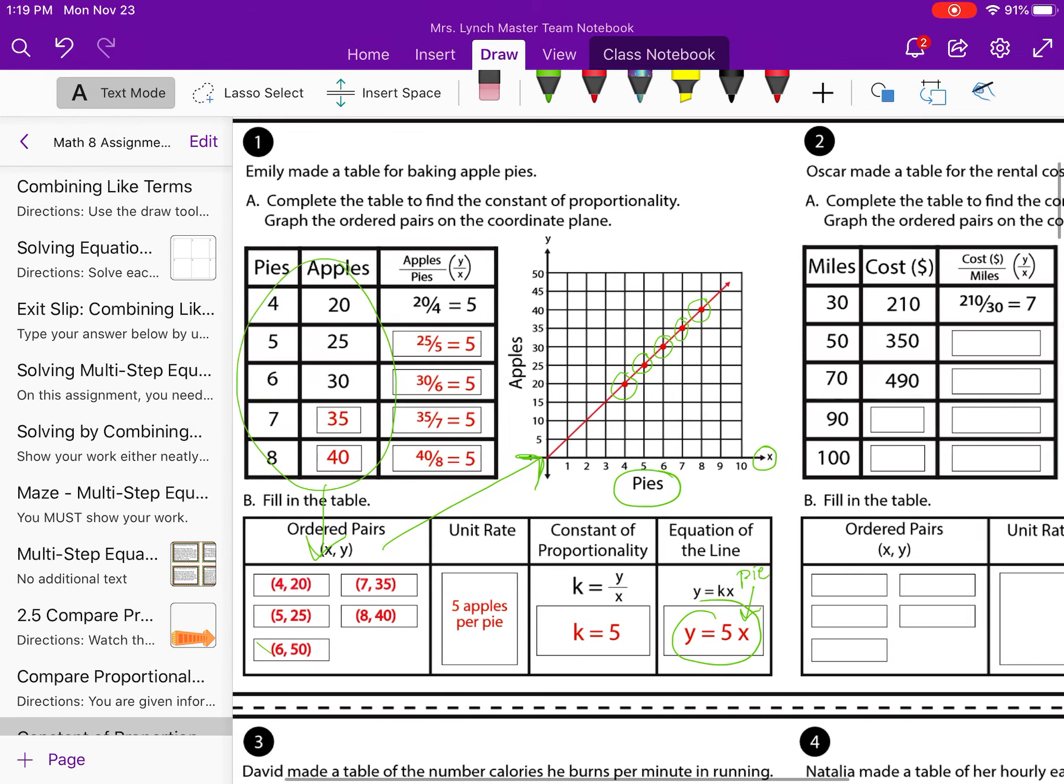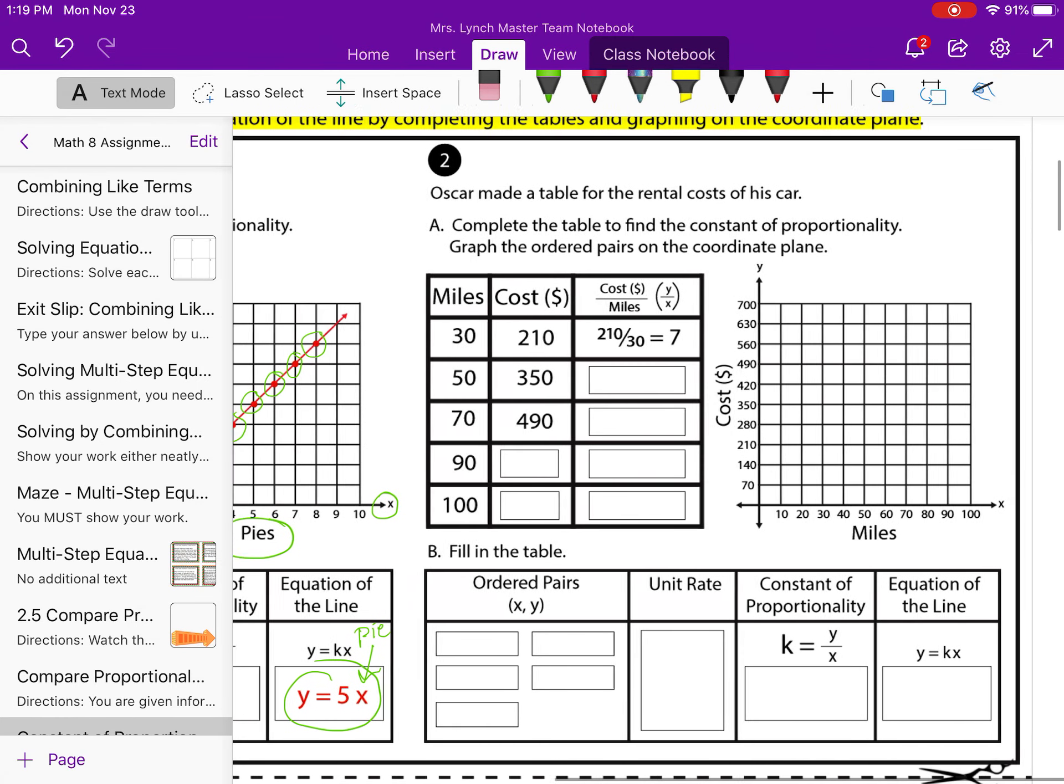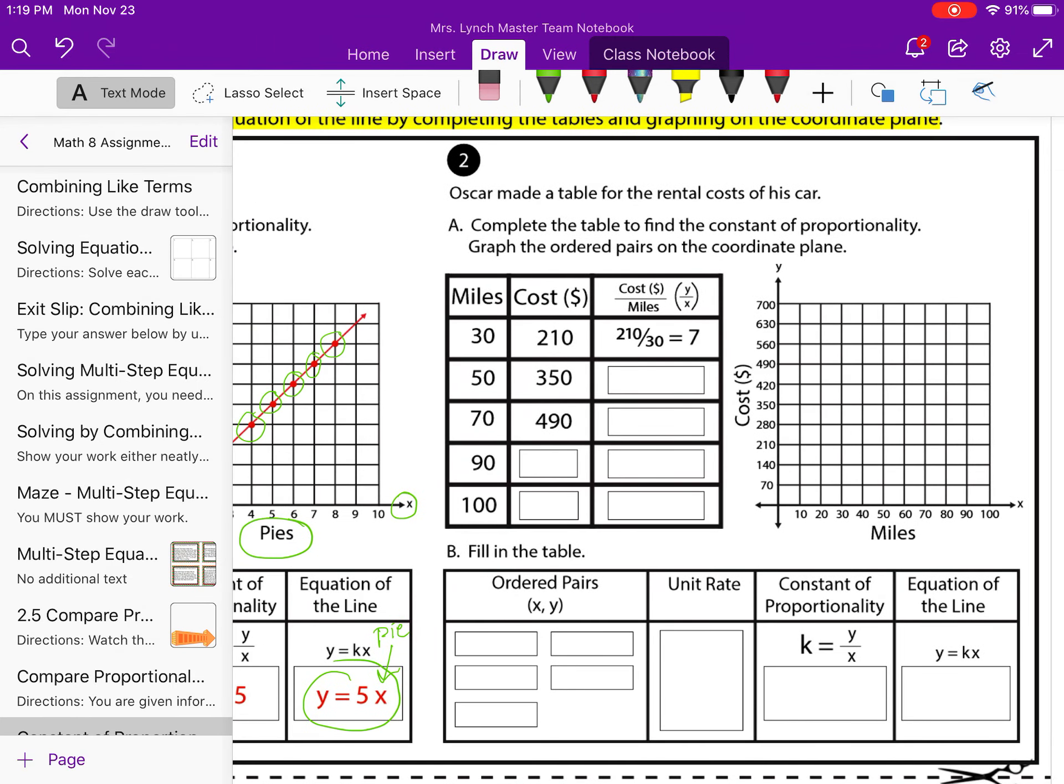All right, so let's try one on our own. Oscar made a table for rental costs of his car. Again, we need to complete the table and graph the ordered pairs. Okay, so when he went 30 miles, it cost him $210. That's insane. Oh, I guess it's renting. For a second, I was thinking it was gas. That's not gas. It's how much it costs to rent his car. So 30 miles cost him $210.